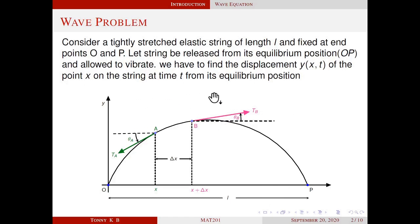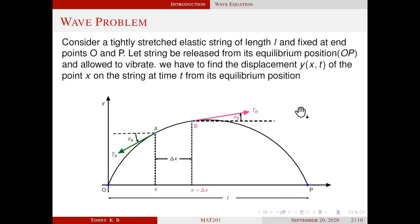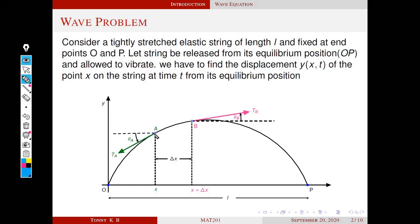This is the statement of our problem. Consider a tightly stretched elastic string of length L, fixed at endpoints O and P. Let the string be released from its equilibrium position OP — this is the equilibrium position along the x-axis — and allowed to vibrate. We have to find the displacement y(x,t) of the point x on the string at time t from its equilibrium position. This displacement function y depends on two things: the distance from the origin x, and time t. We have to predict the position of the string accurately with respect to time.